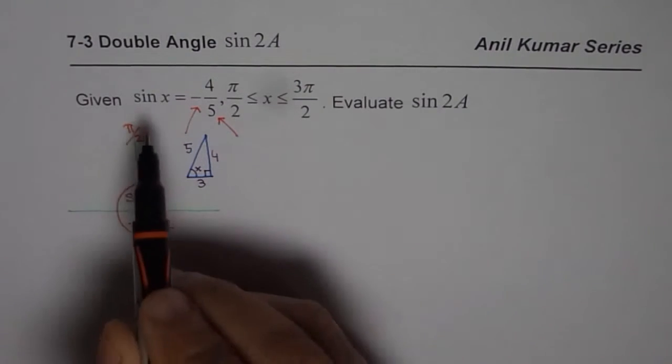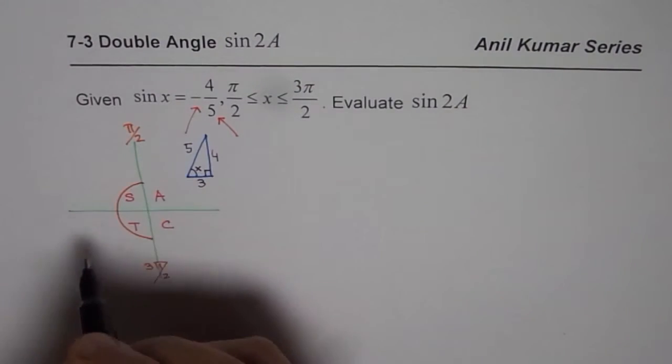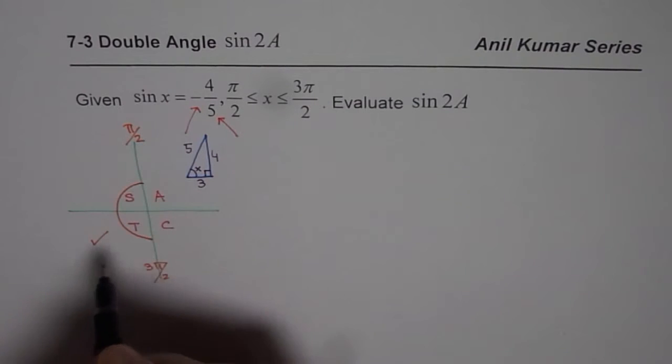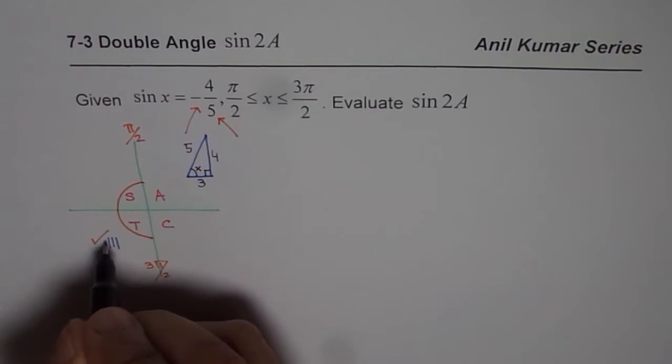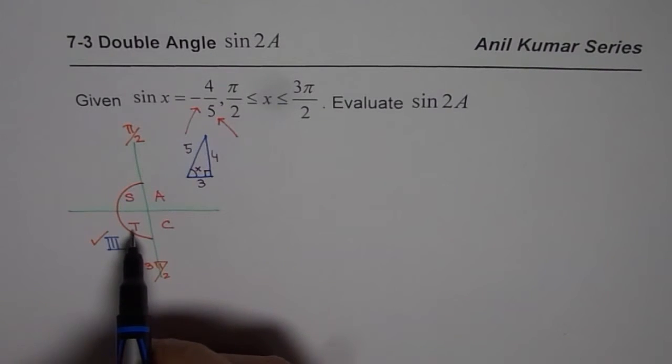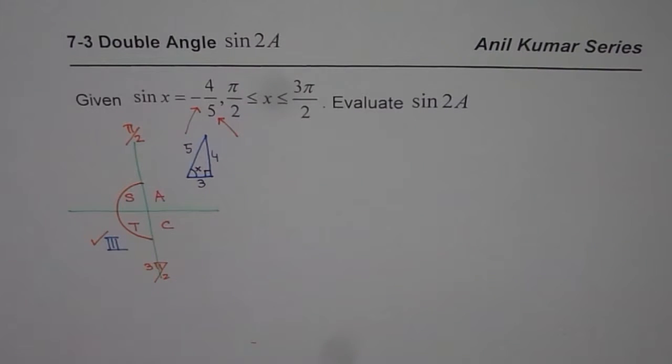Now when sine is negative, it is only in quadrant 3. So that is how we know that this value of x should be in quadrant 3, where sine is negative and cosine is also negative.